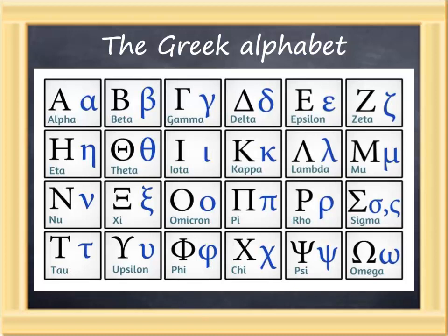Iota is the short I, but it's pronounced as the I in intrigue. Kappa is the K sound, as in kitchen. Lambda is the L sound, as in law.